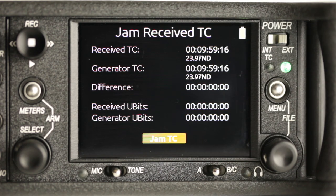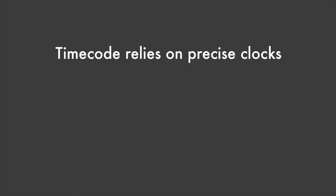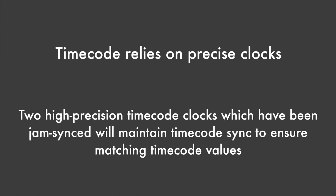While there are other methods of syncing sound and picture — for instance, using a slate or some other visual reference — manual syncing is time and cost-intensive. Timecode relies on incredibly precise clocks. Two high-precision timecode clocks which have been jam-synced will maintain timecode, ensuring matching timecode values.